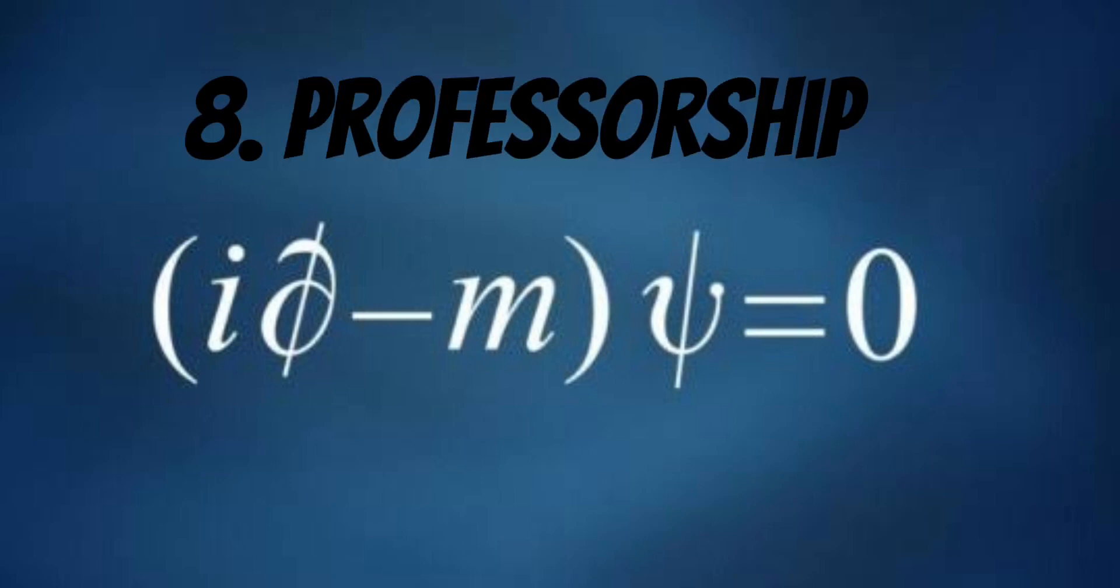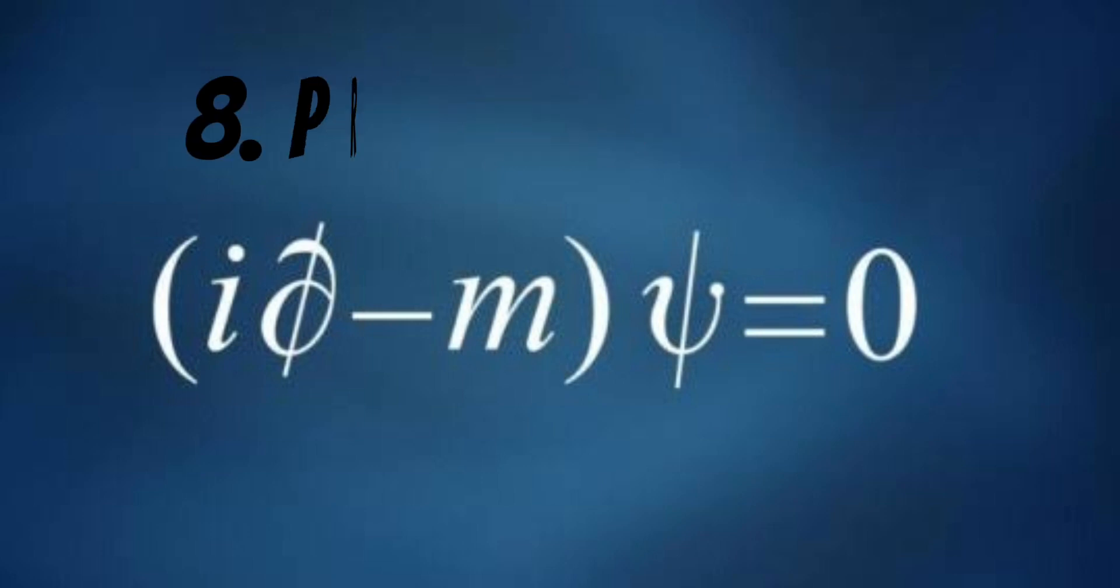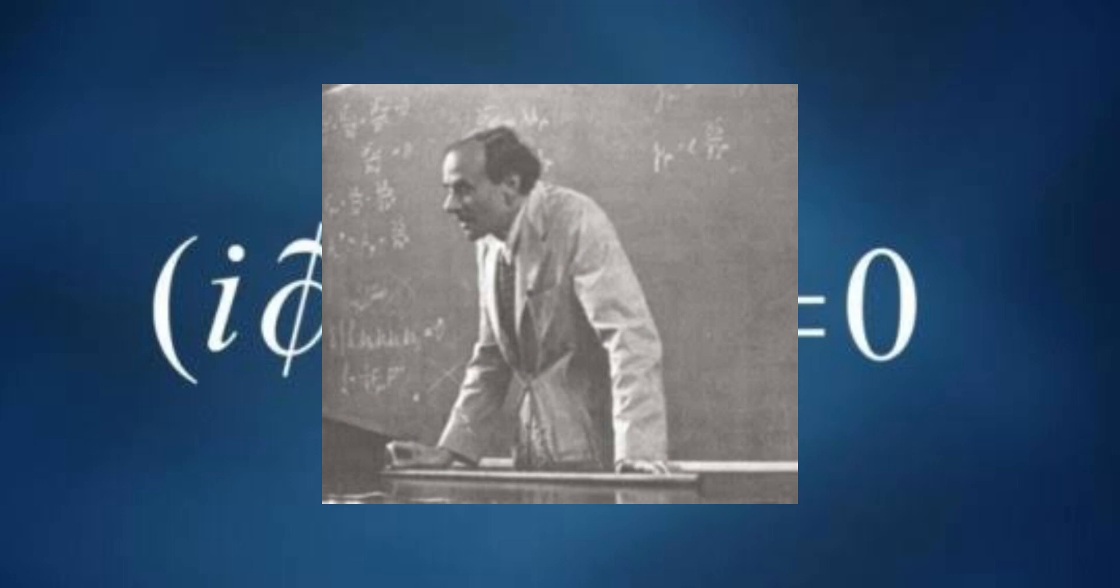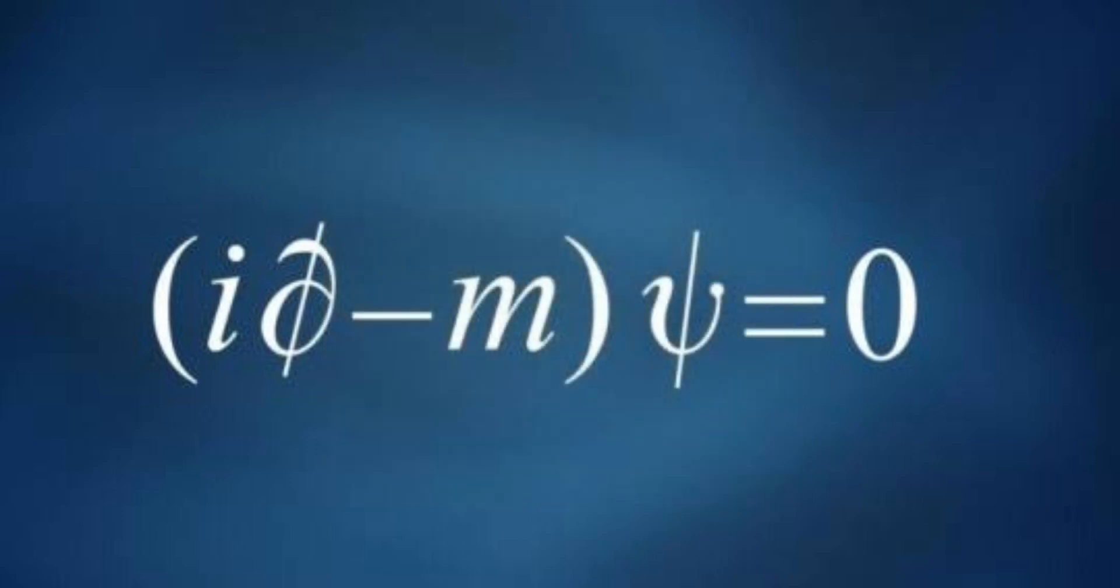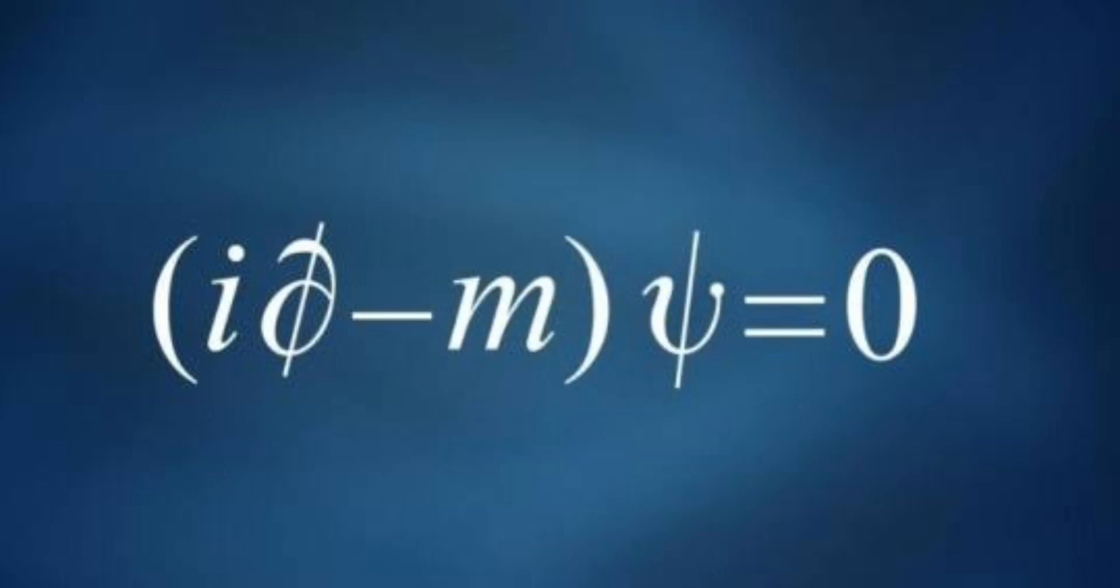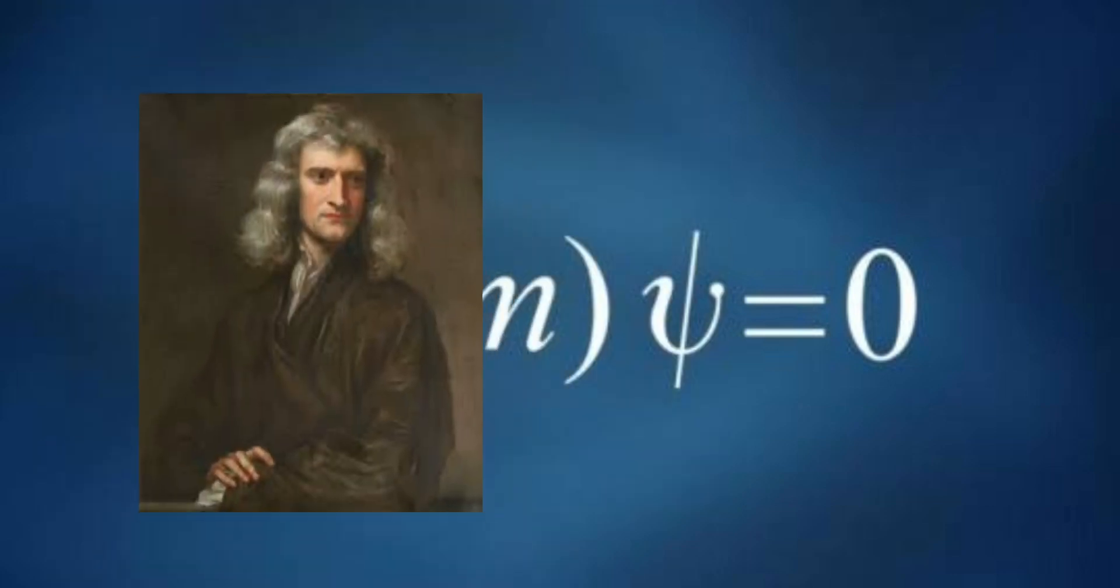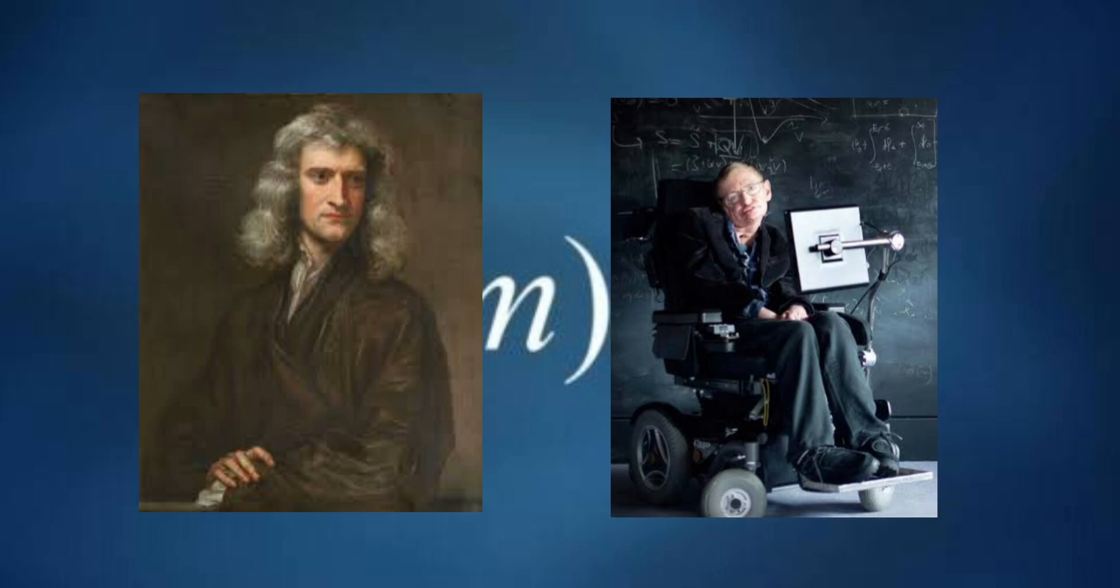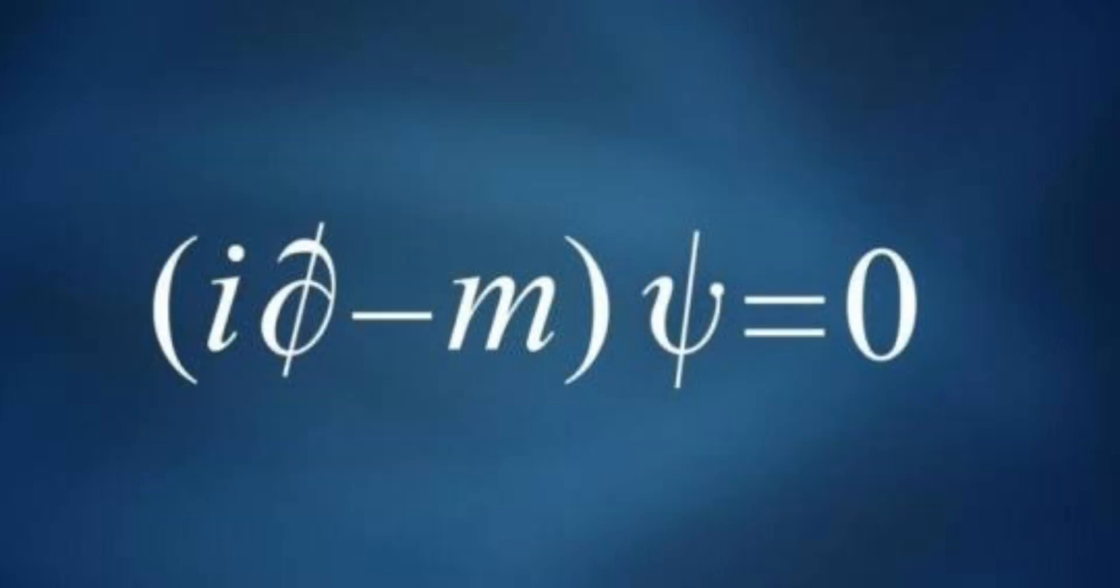Number 8: Professorship. Dirac held esteemed academic positions throughout his career. Notably, he was the Lucasian Professor of Mathematics at the University of Cambridge, a position previously held by luminaries like Isaac Newton and later by Stephen Hawking. This position highlights the recognition of his immense contributions to the field.